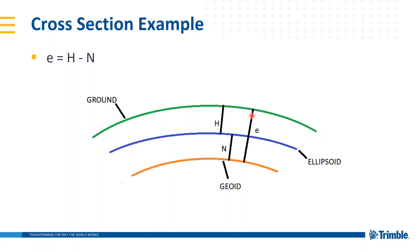A question comes up: in this cross-section example the geoid is shown below the ellipsoid — is there any instance where the geoid would be above the ellipsoid? Yes, depending on where you are in the world it sure could be. In certain areas it is above. In my area it's usually below, which is why I draw it that way, but yes, it could be above the ellipsoid.